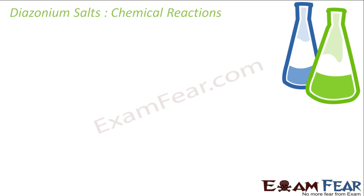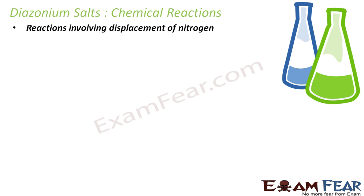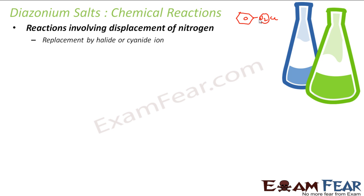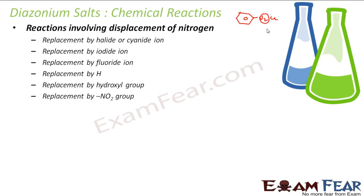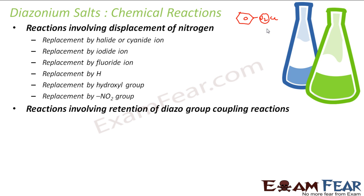Let's talk about some of the chemical reactions shown by diazonium salts. The first is the reaction involving displacement of nitrogen. There are reactions where my N2 is displaced — for example, replacement by halide or cyanide ions, replacement of N2 by iodide, fluoride, hydrogen, hydroxyl groups, or NO2 group. We will also have some reactions where the diazonium group — that is, the N2 group — is retained, and that is called coupling reactions.